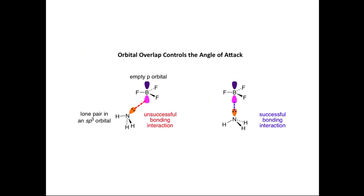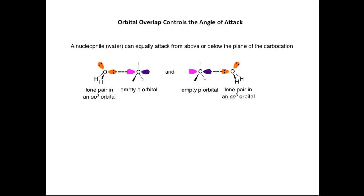Let's now consider how orbital overlap controls the angle of attack of a nucleophile on an electrophile. We'll look at the interaction of the lone pair in an sp3 orbital on ammonia with the empty p-orbital in boron trifluoride. If ammonia attacks from one orientation, we don't maximize orbital overlap — this leads to an unsuccessful bonding interaction. When ammonia approaches from the correct orientation, we maximize the orbital interaction, leading to a successful bonding interaction.